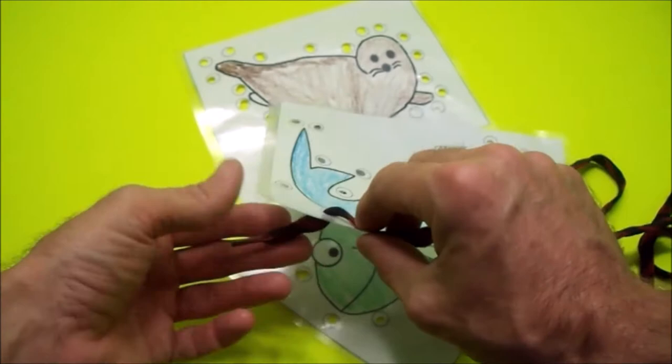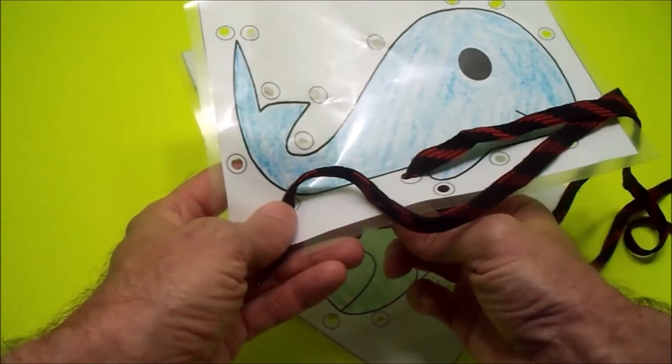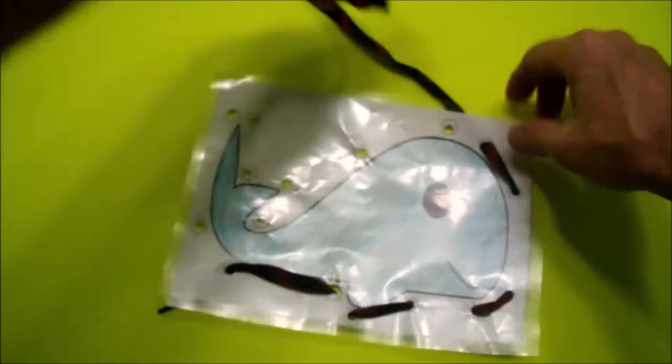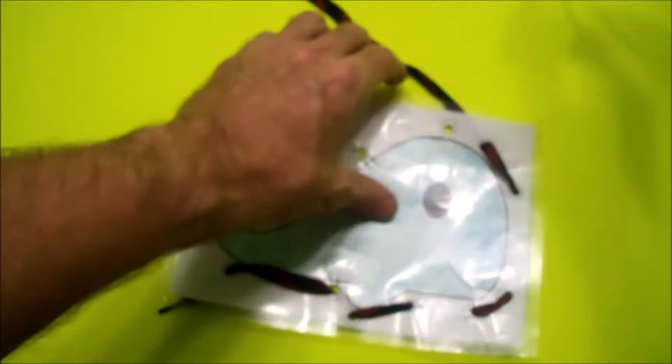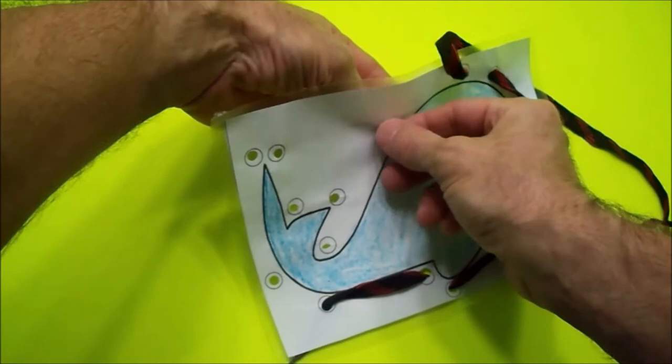Then come to the next hole, hole number two. Go in from the front and pull it through just like that. In through the front, out through the back. In through the back, out through the front. Go in, go out. Front, back.